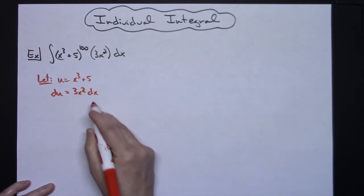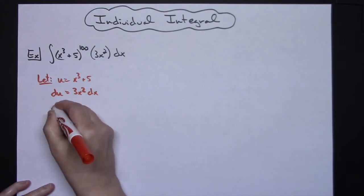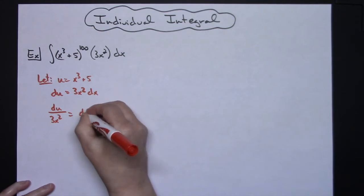I'm going to go ahead and solve all the way down for dx. So I'll have du over 3x squared equaling that dx.